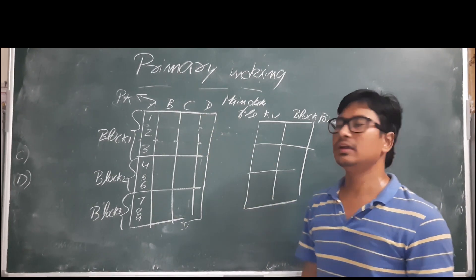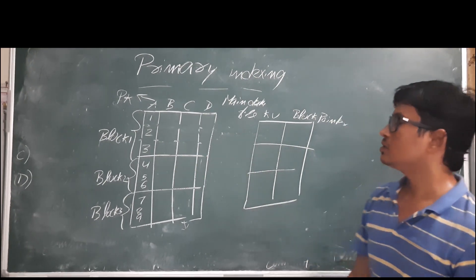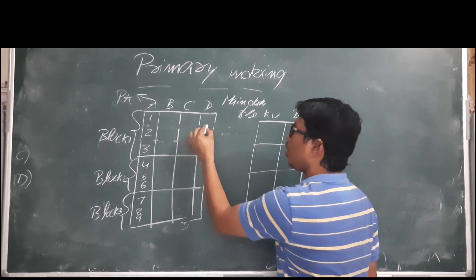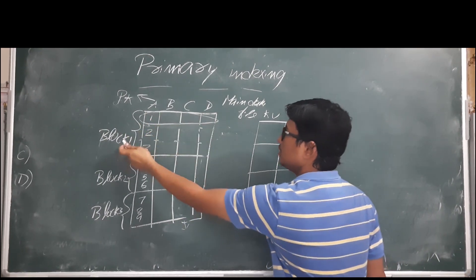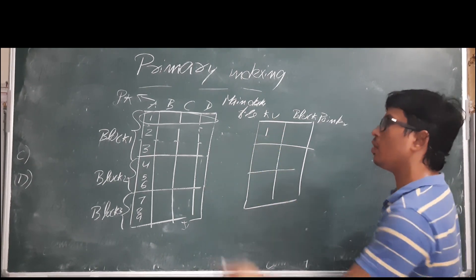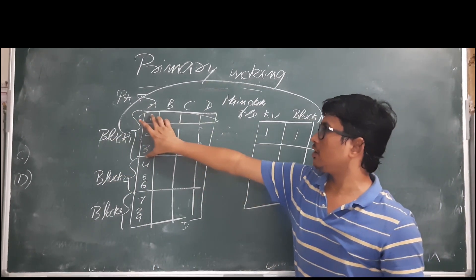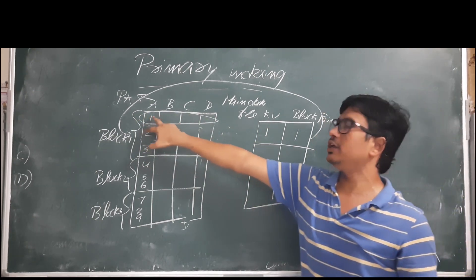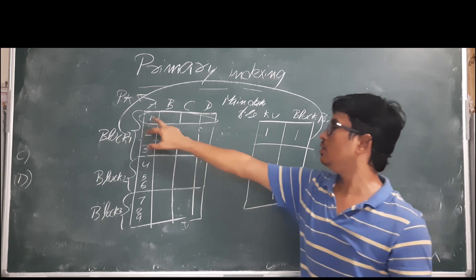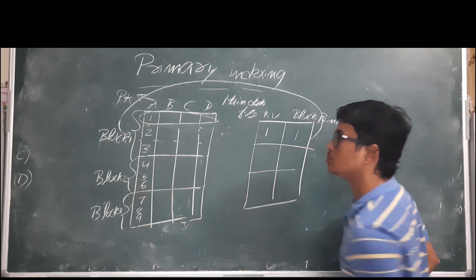The index file is small compared to the data file. We have divided the main file into three blocks — block one, block two, and block three. For each block, only the first entry is recorded in the index file. In block one, the first entry value is 1 and the block number is also 1, so it points to block one. This first record of each block is called the anchor record.